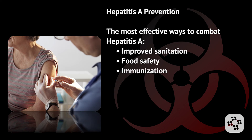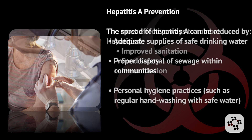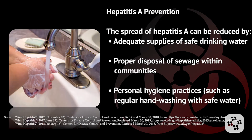The most effective ways to combat Hepatitis A are through improved sanitation, food safety, and immunizations. The spread of Hepatitis A can be reduced by adequate supplies of safe drinking water, proper disposal of sewage within communities, and personal hygiene practices such as regular hand washing with safe water.